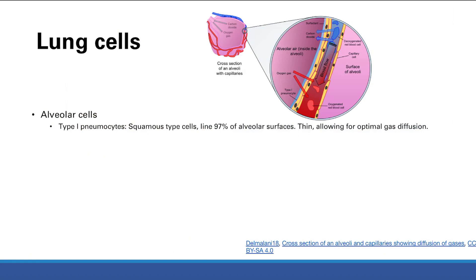Now looking at lung cells at a microscopic level, starting with the alveoli. Type 1 pneumocytes are squamous cells that line 97% of the alveolar surface. They are very thin, which allows for optimal gas diffusion. An easy memory trick: type 1 pneumocytes look like the number 1 — they're so thin.